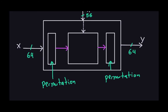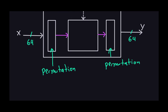Both permutations just rearrange the bits in the 64-bit block. The initial permutation and the final permutation are closely related. The first permutation applied to the plain text is called the initial permutation, written as IP.